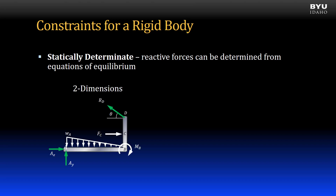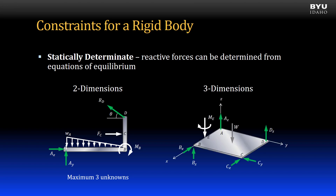For example, in two-dimensional problems we have three independent equations of equilibrium that we can apply. That means for statically determinate problems we are limited to a maximum of just three unknowns. For three-dimensional problems, the number of independent equations of equilibrium increases to six, so we are limited to a maximum of six unknowns. We will only consider statically determinate problems in this course.